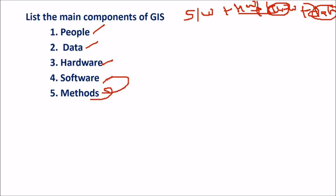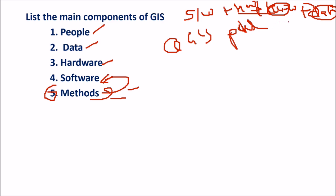Methods can be included in software, or you can extract them separately because methods used to solve certain issues — for example in Quantum GIS, you have plugins. If you are interested in some functionality, you just use a plugin. In QGIS also you find all this — you can add functionality. These methods are employed by certain sets of people and not by others.